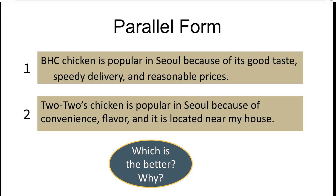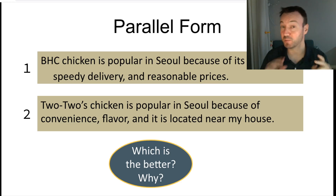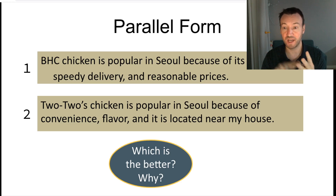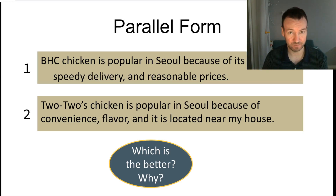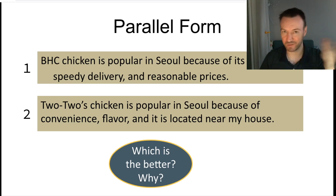Welcome back from reading that. So if we look at our examples here, example two is breaking that parallel structure because we have a noun — 'convenience,' noun — 'flavor,' and then a short phrase at the end: 'it is located near my house.' You're breaking that pattern. What we really need is a pattern. So with the first example, we have 'good taste' — noun; 'speedy delivery' — noun; 'reasonable prices' — noun. So you have adjective-noun, adjective-noun, adjective-noun. Just noun, noun, noun would be okay. Equally, just adjectives would be okay — good, speedy, and reasonable.